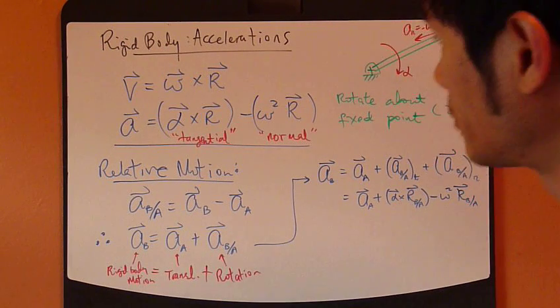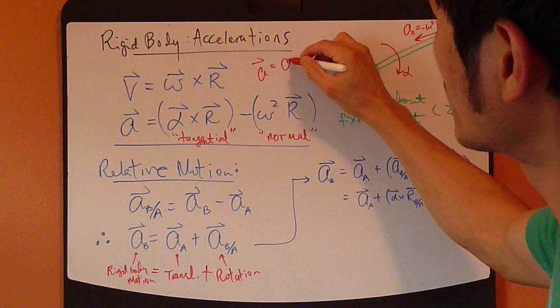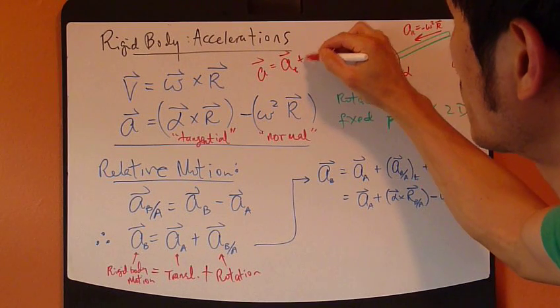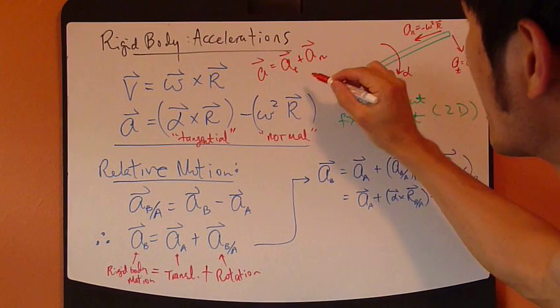So we can write this as a tangent plus a normal component, a vector.